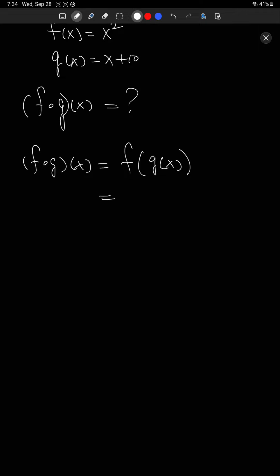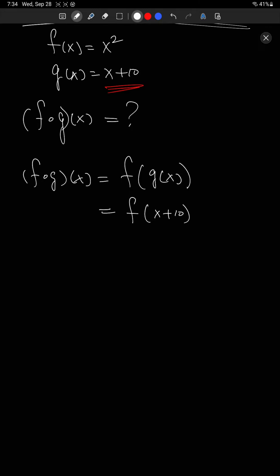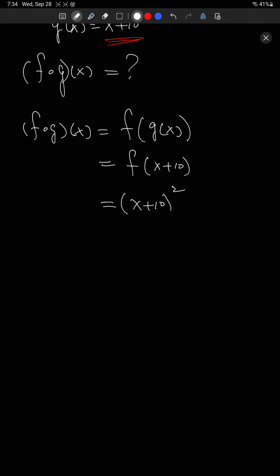If we want to write out the formula, we say what is g of x? Our instructions say it's x plus 10. So this is equal to f of x plus 10. And then what are the instructions for f? The instructions for f say whatever we put in, we square it. So this is x plus 10, whole thing squared. That's our new formula for f after g of x.